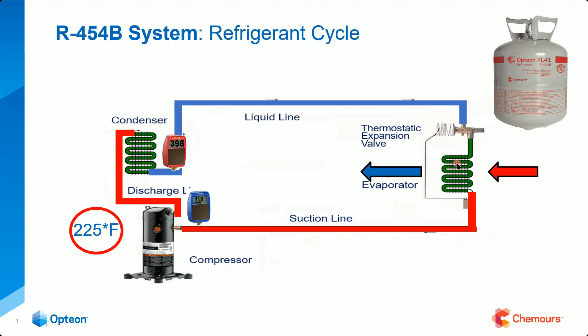Think about it: if you were outside for 24 hours at 60 degrees, you could survive in 60-degree air, but you couldn't survive in 60-degree water. So we're not really making anything cold — we're removing heat. We're heat movers. The air comes across the coil, removes that heat from the air, and then it gets cold on the other side.